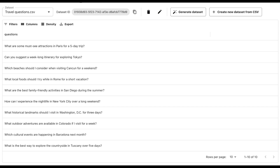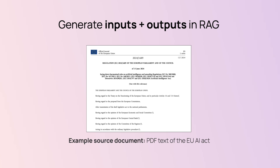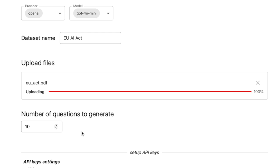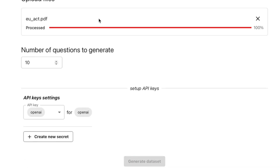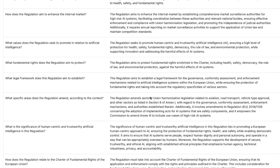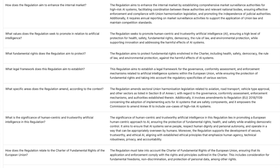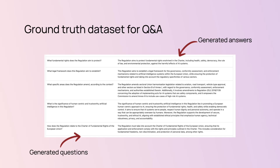In some scenarios, you can use synthetic data to generate both inputs and outputs. This is useful for systems like RAG. For example, you can take a source document, have an LLM extract key points, and then generate questions for them. These questions will have known answers since they are literally taken from the documents, giving you a labeled ground truth dataset to compare your LLM app responses against.